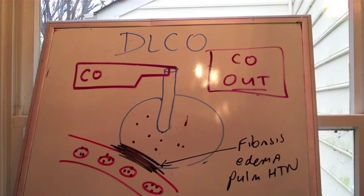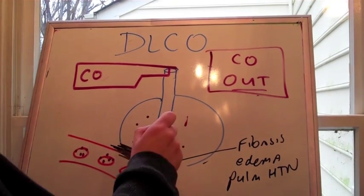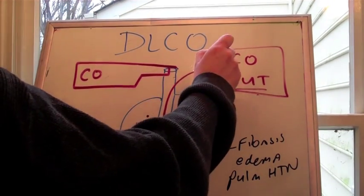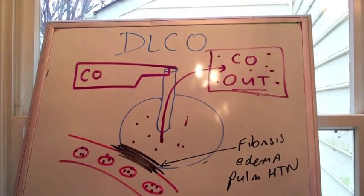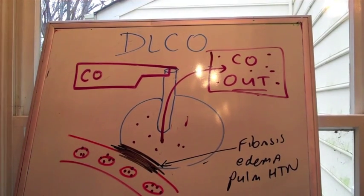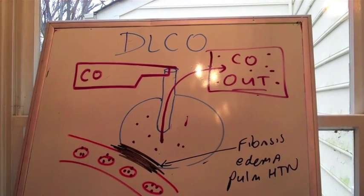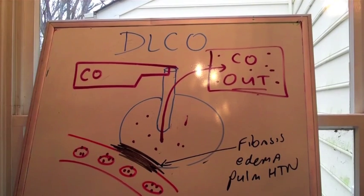Now, you can envision if there's fibrosis or interstitial lung disease, edema, a thickened pulmonary artery. That carbon monoxide can't all get into the blood. Some gets exhaled. And then the diffusion capacity seems low.